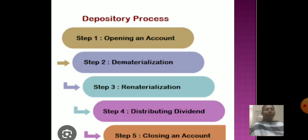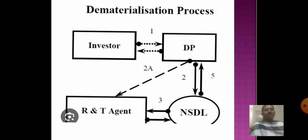The process of the depository system: There are five processes — first is opening an account, second is dematerialization, third is rematerialization, fourth is distribution/division, and fifth is closing of an account. The dematerialization process involves how the investor acts through depository participants, and how the agent works between the investor and depository participants to gain assets.